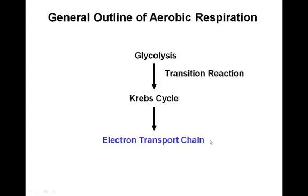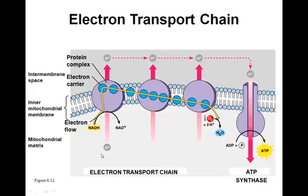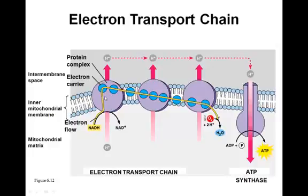Lastly, we discuss the electron transport chain. This occurs along the inner mitochondrial membrane, where a number of different protein complexes work together. These protein complexes allow hydrogen ions to flow across the membrane. The high-energy electron carrier molecules NADH and FADH2 pass off their electrons — electrons obtained during the Krebs cycle — to these proteins. It's called the electron transport chain because these proteins transport electrons from one protein to the next.